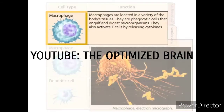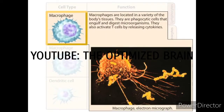Macrophages are located in a variety of the body's tissues. They are phagocytic cells that engulf and digest microorganisms. They also activate T cells by releasing cytokines.